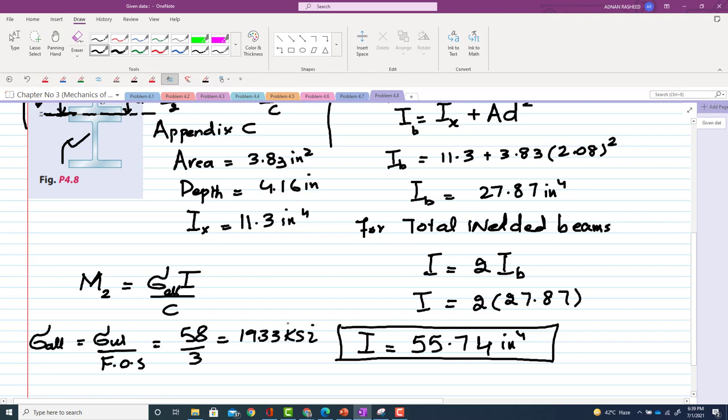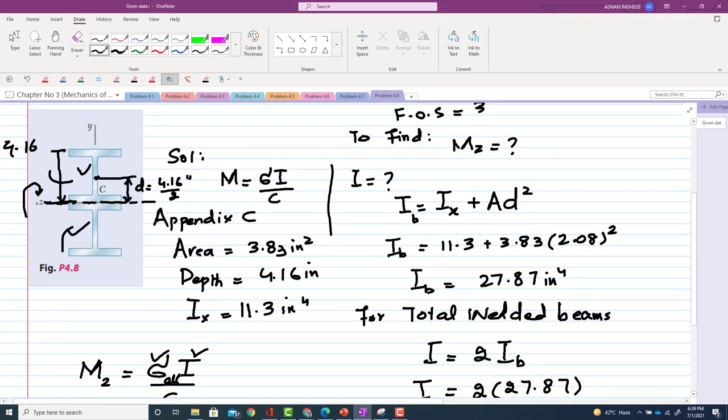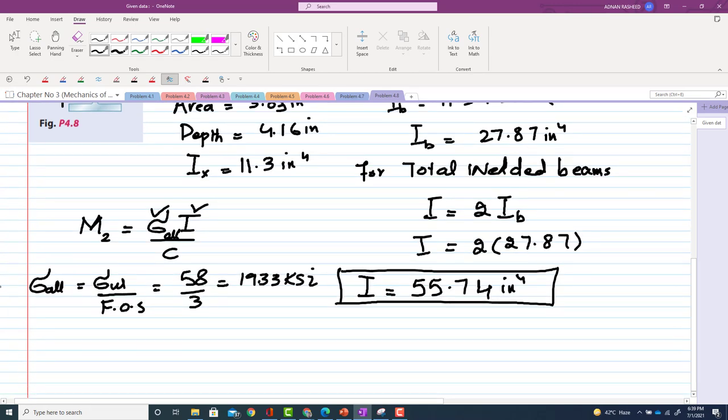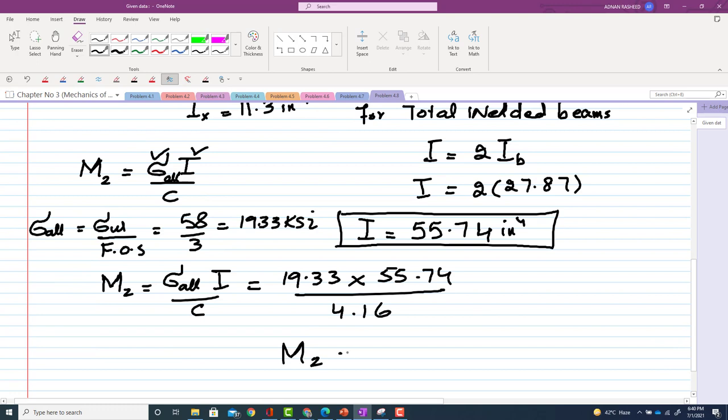Now you have sigma allowable, you have I, and c is the distance from center to the outermost fiber. That total height is 4.16. Now you have all the values, just put in this formula. Mz is equal to sigma allowable into I divided by c. That is 19.33 ksi times 55.74 divided by 4.16. So Mz or M allowable is 259 kip-inches.